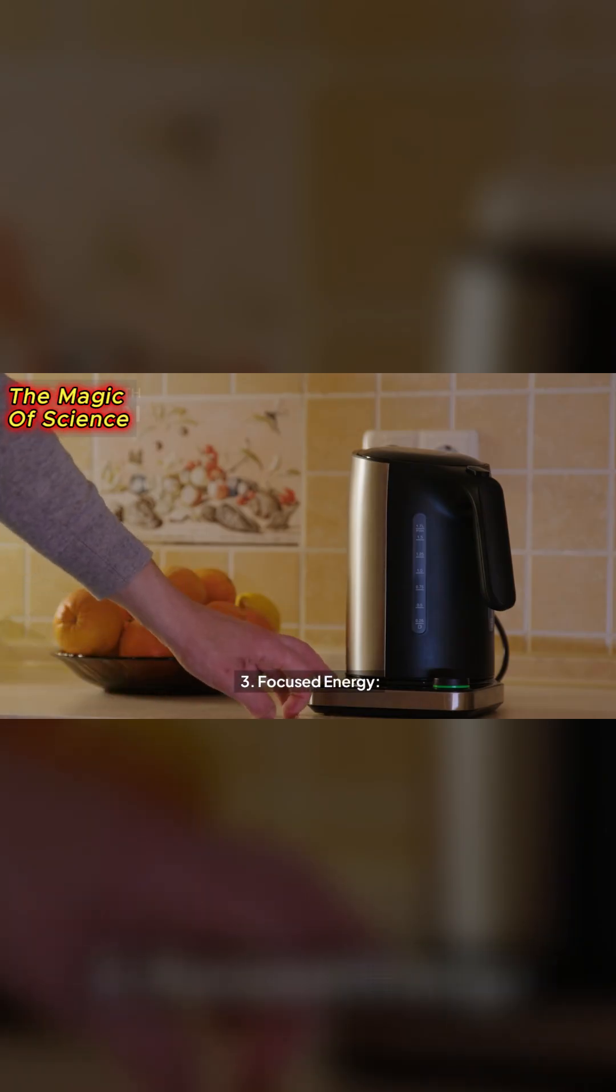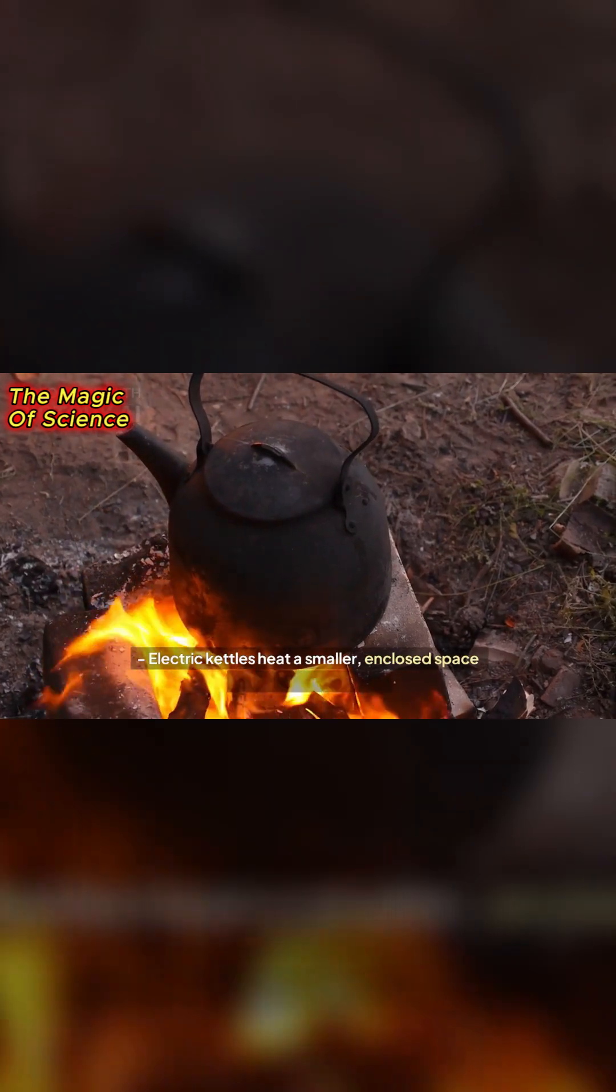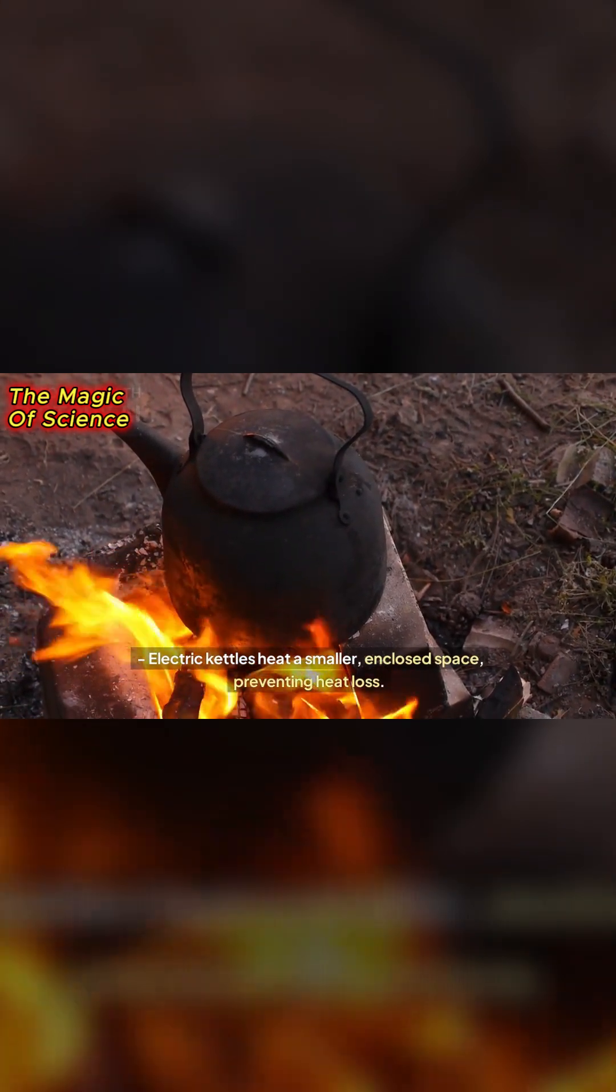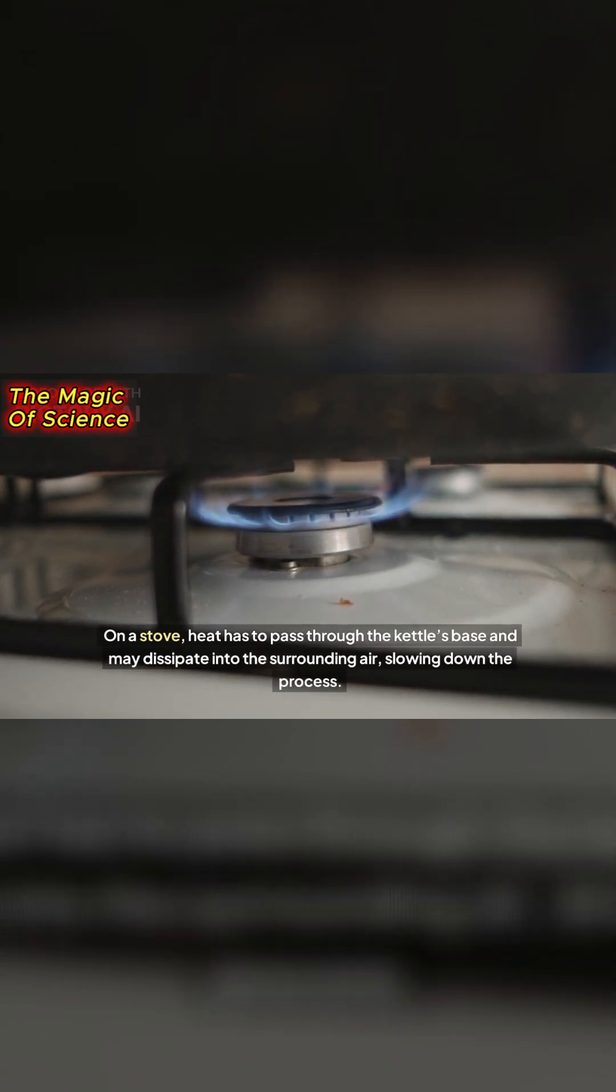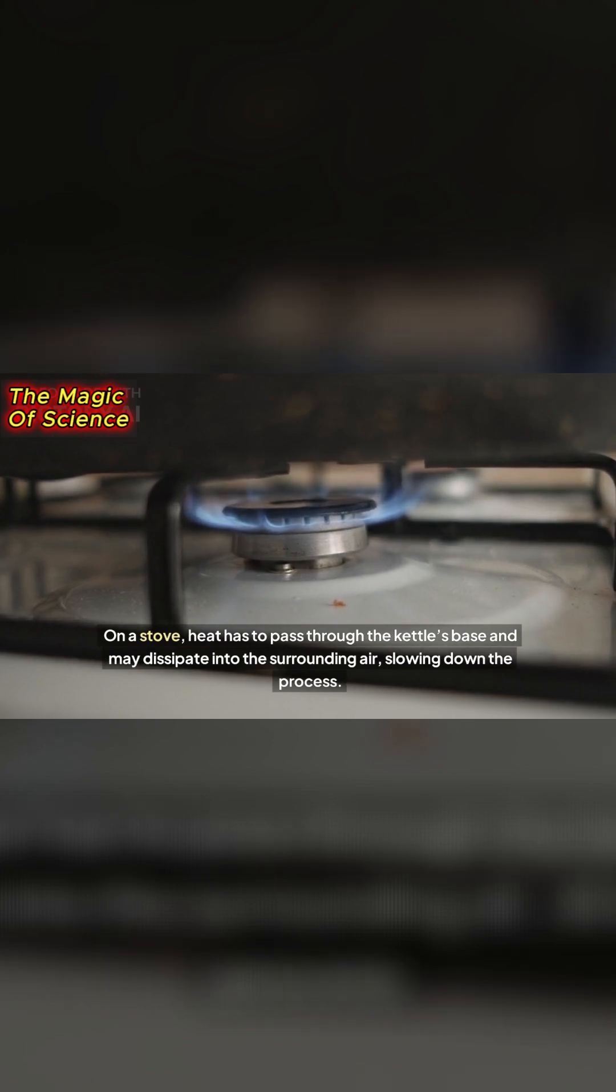3. Focused energy. Electric kettles heat a smaller, enclosed space, preventing heat loss. On a stove, heat has to pass through the kettle's base and may dissipate into the surrounding air, slowing down the process.